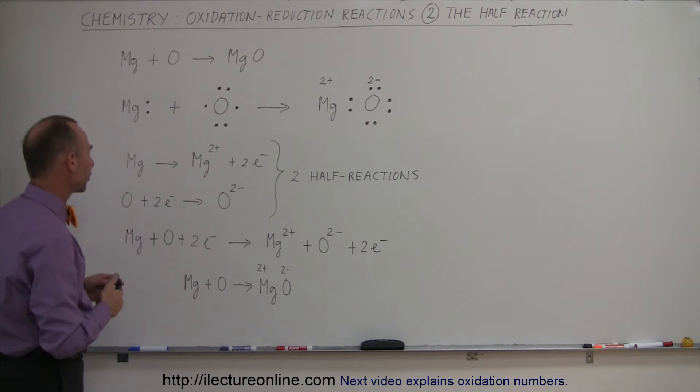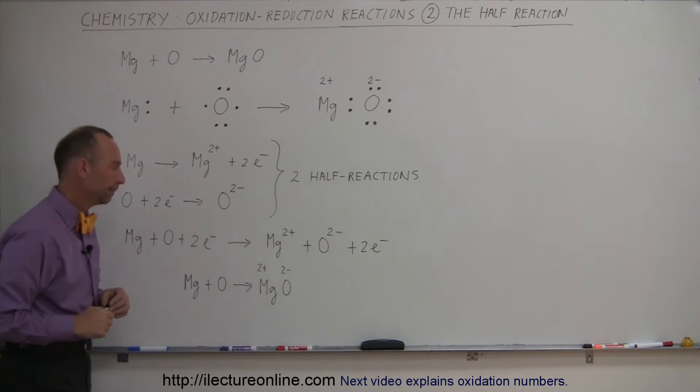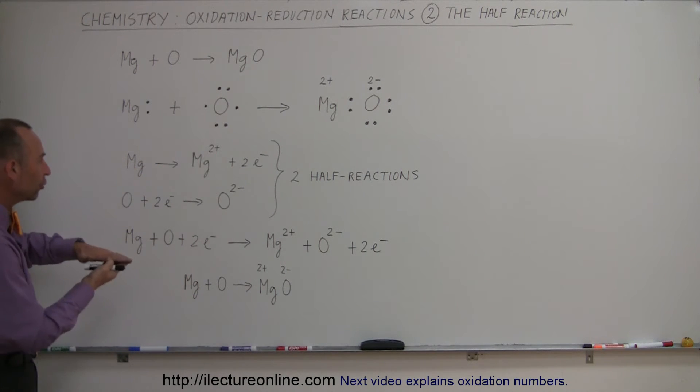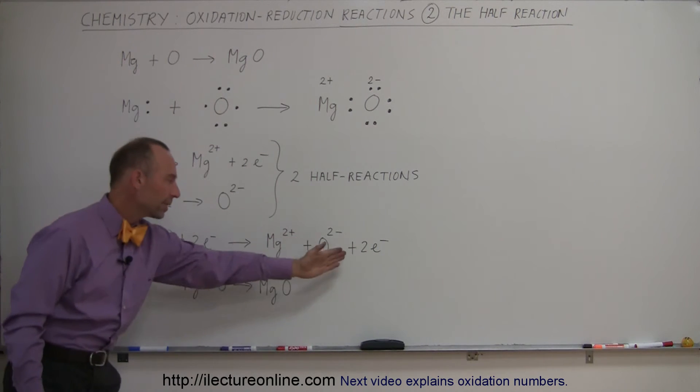The other half reaction shows oxygen accepting the two electrons and then becoming an oxygen two minus ion. Now, if we combine those two, if we add up all the reactants on the left side and all the products on the right side in a complete reaction,